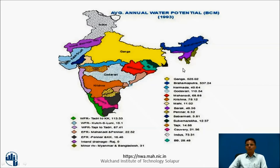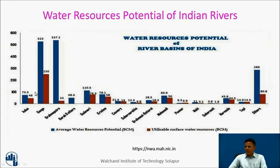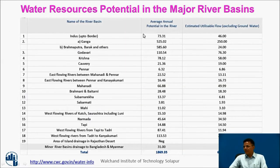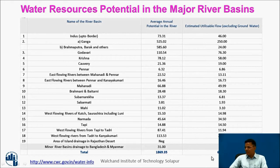This variation makes it necessary to transfer water from one basin to another basin, but the purpose of this session is to give the idea of the water resources potential in different rivers. The same figures are shown in graphical form. In Brahmaputra it is 537, but as only a small portion of the Brahmaputra river comes into India, the utilizable amount is just 24 billion cubic meters. The same figures are also given in tabular form, showing the name of river basin, average annual potential, and estimated utilizable flow excluding groundwater. The total average annual potential in Indian rivers is 1869 billion cubic meters, and out of that, utilizable potential is 690 billion cubic meters.